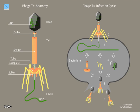Bacteriophages present in the environment can cause fermentation failures of cheese starter cultures. In order to avoid this, mixed strain starter cultures and culture rotation regimes can be used.